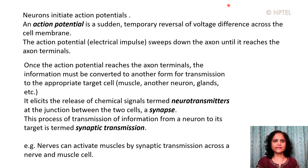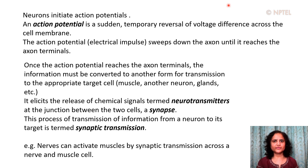This elicits the release of chemical signals termed neurotransmitters at the junction between two cells, which is referred to as a synapse. This process of transmission of information from a neuron to its target is termed synaptic transmission.